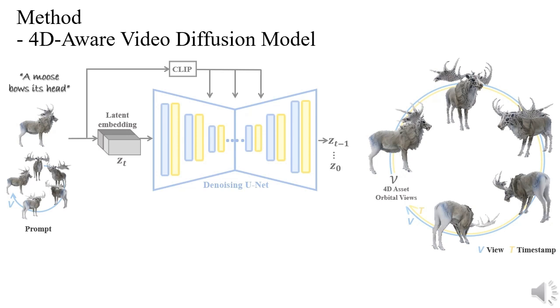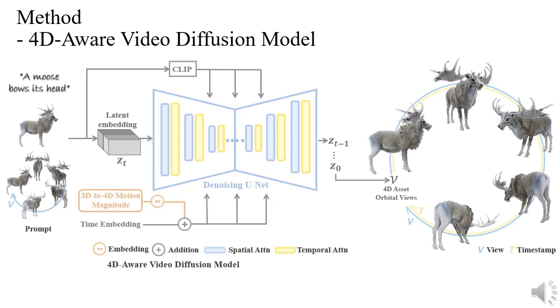To enable explicit control over dynamic strength, we propose the 3D to 4D motion magnitude metric as guidance injected into the diffusion model. We also incorporate the motion magnitude reconstruction loss to encourage the denoising network to learn the 3D to 4D dynamics. During the sampling stage, to further augment the dynamic strength of 3D objects, we propose a 3D-aware classifier-free guidance.